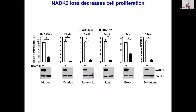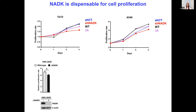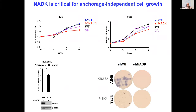We generated knockouts of NADK2 via CRISPR in many different cell lines — six different cells of different origins: HEK-293, HeLa, K562, A549, T47D, and A375. In all these different cells, loss of NADK2 showed a drastic effect on cell proliferation. This makes sense because we're knocking out a gene that is critical for maintaining mitochondrial NADPH. At the same time, this was a little surprising because cytosolic NAD kinase seemed to have no effect on cell proliferation, while NADK2 loss had a dramatic effect and was important for anchorage-dependent cell growth.